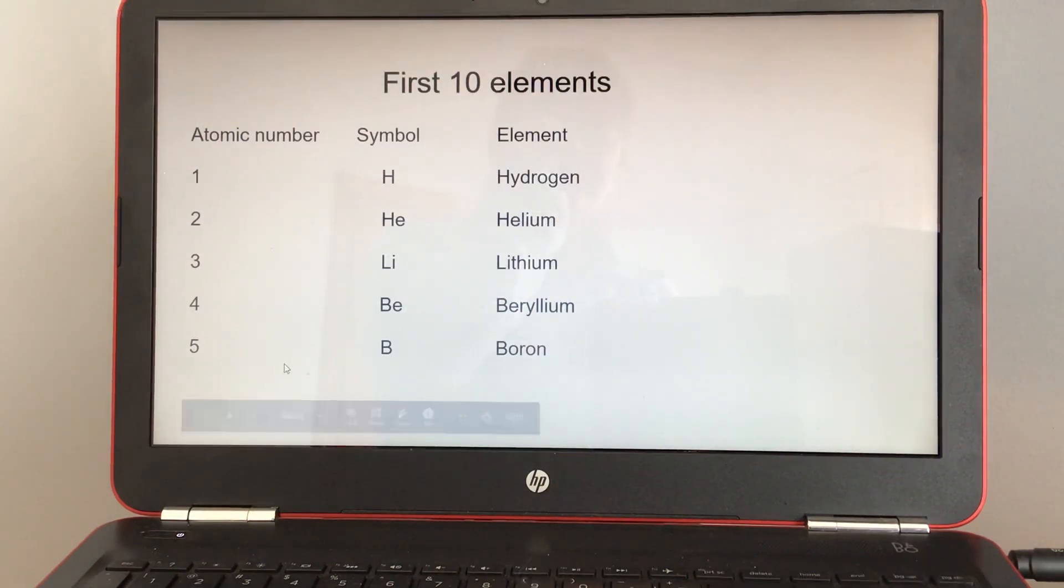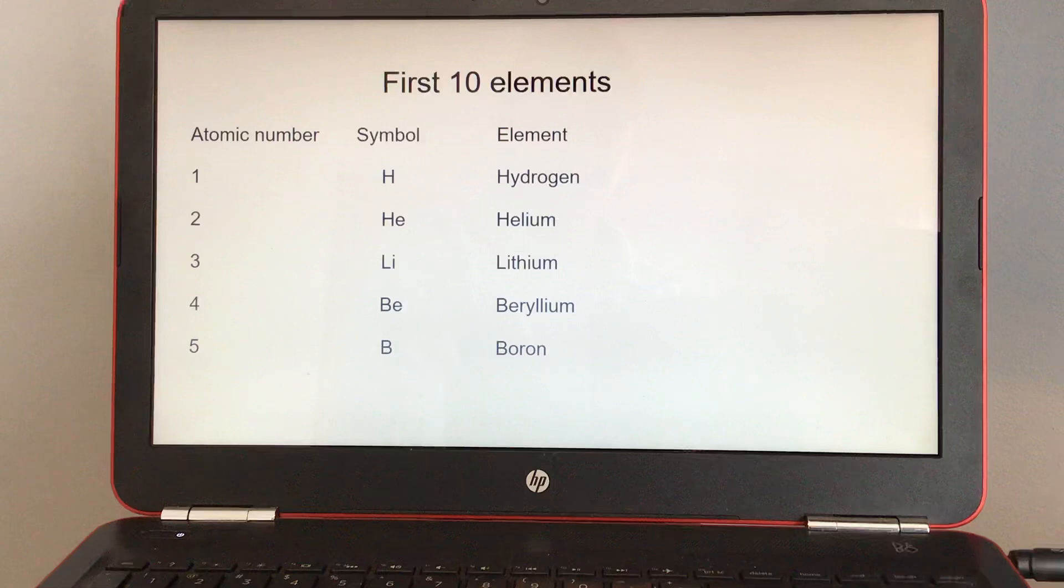And then I had you try to, we went over the first ten elements, the atomic number, the symbol, and the element. And I told you that the symbol, if it's one letter it's capitalized, if it's two letters the first letter is capitalized, the second letter is lowercase.